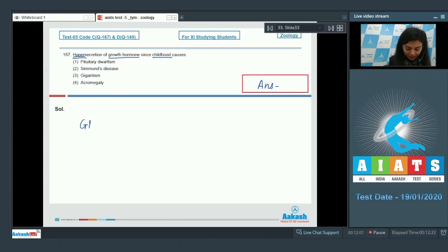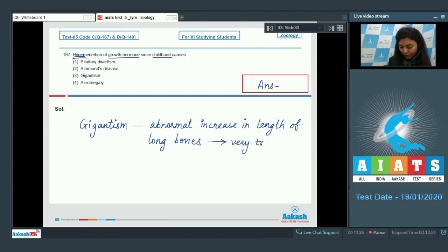When that is the case, it could result in gigantism. With the excess of growth hormone, there is an abnormal increase in length of long bones, and this could lead to very tall individuals.